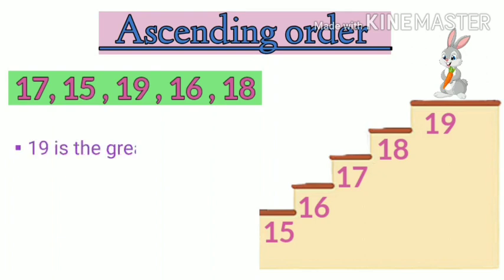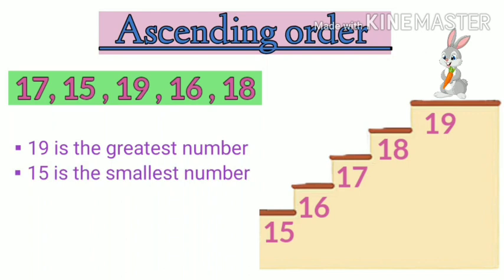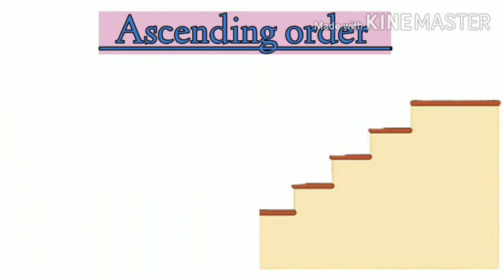So as you can see, 19 is the greatest number and 15 is the smallest number. Let's do the next number.